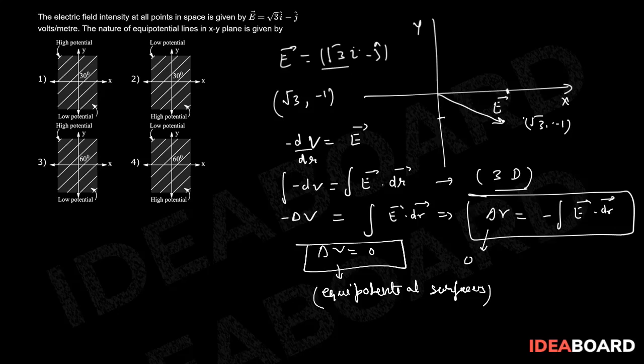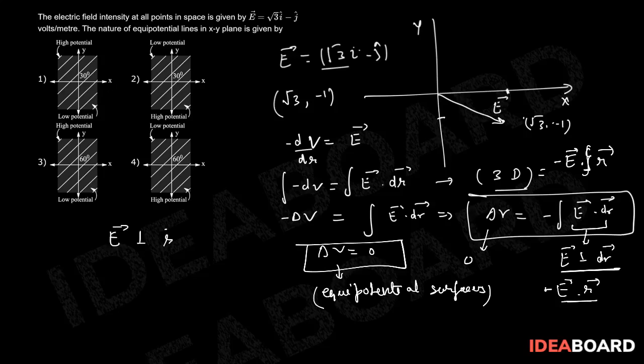Equipotential surfaces means this term has to be 0. That means the only possible way is that E should be perpendicular to dr vector or dr vector or r vector. In fact here I could have written, because e is constant, e will be outside. Minus e integration of dr, that would become e dot r. Minus e dot r. Basically r has to be perpendicular. E should be perpendicular to r vector.